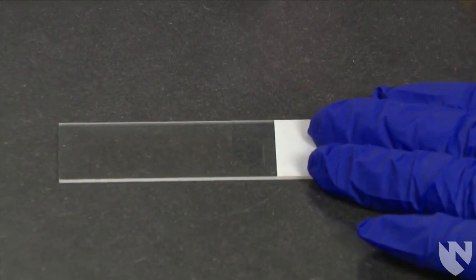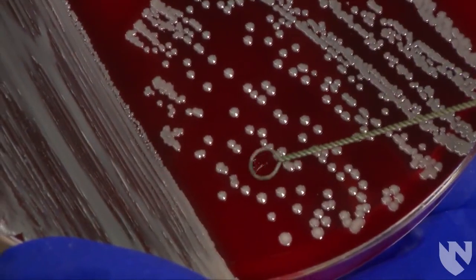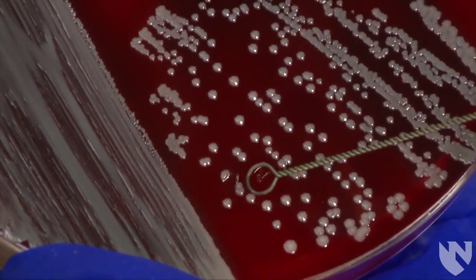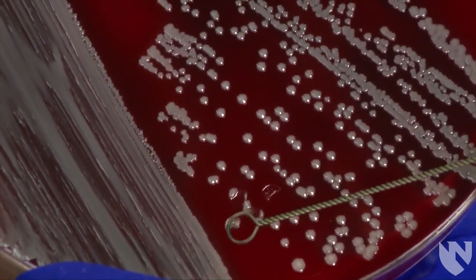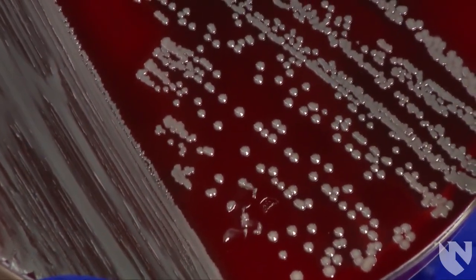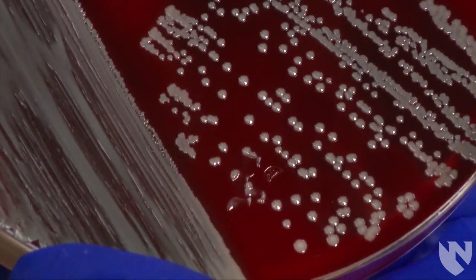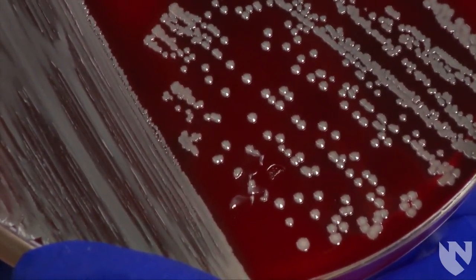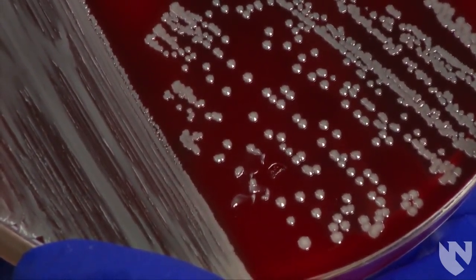Place a clean microscope slide in front of you. Gently touch the top of 3 to 5 well-isolated colonies growing on a non-selective media with a sterile wooden stick or loop. You want to make sure to pick up a sufficient amount of organism to see the reaction.